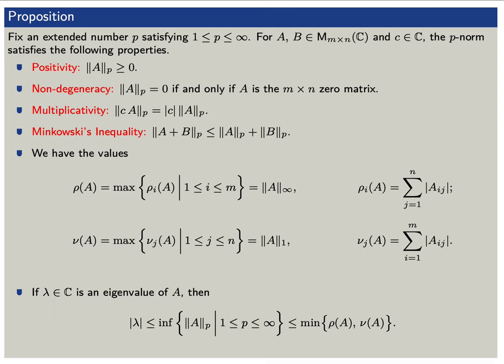Moreover, if lambda is an eigenvalue of A, then the absolute value of lambda is less than or equal to each of the p-norms of A. In particular, it is less than or equal to the minimum of the 1-norm (nu of A) and the infinity norm (rho of A) of A.